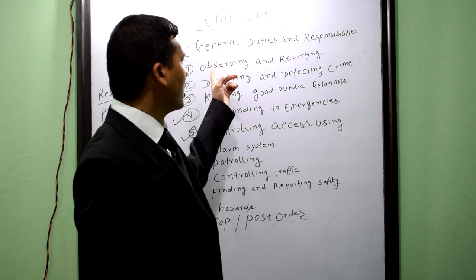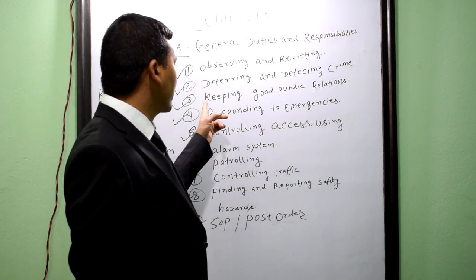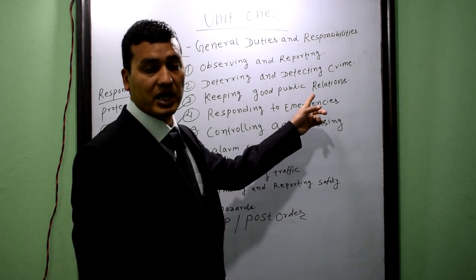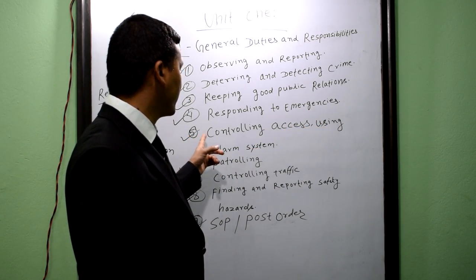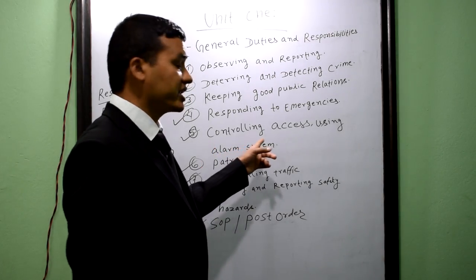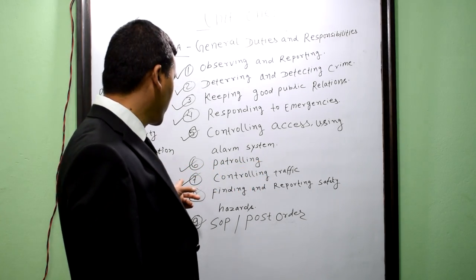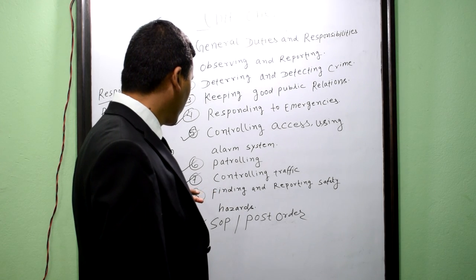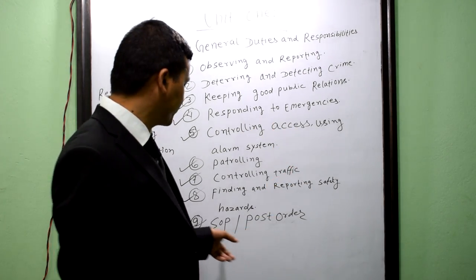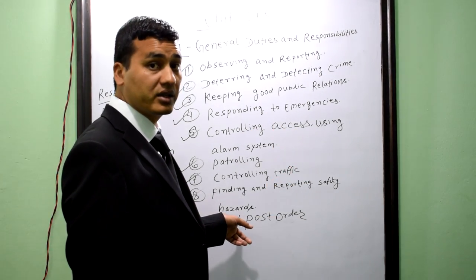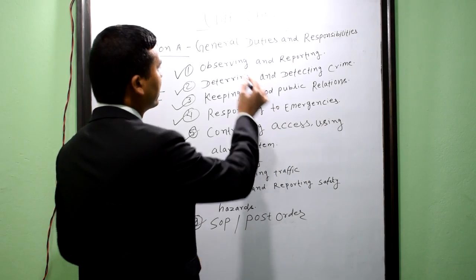These nine points are the general duties of the security guard: Number one, observing and reporting. Number two, deterring and detecting crime. Number three, keeping good public relations. Number four, responding to emergencies. Number five, controlling access and using alarm and surveillance systems. Number six, patrolling. Number seven, controlling traffic. Number eight, finding and reporting safety hazards. Number nine, SOP — Standard Operating Procedure — and post order. Now we have finished the general duties.